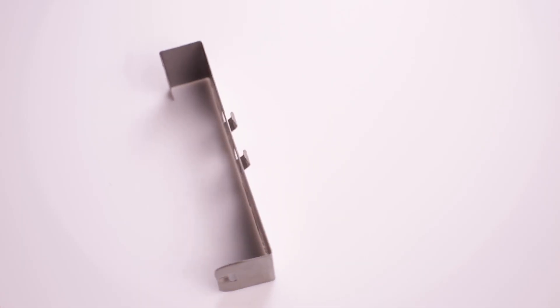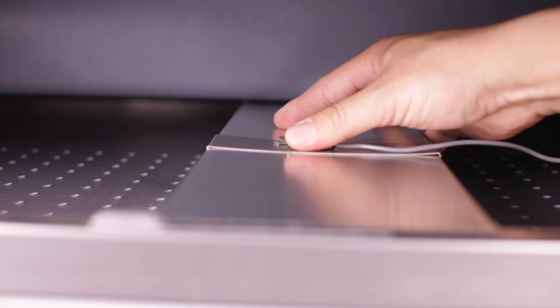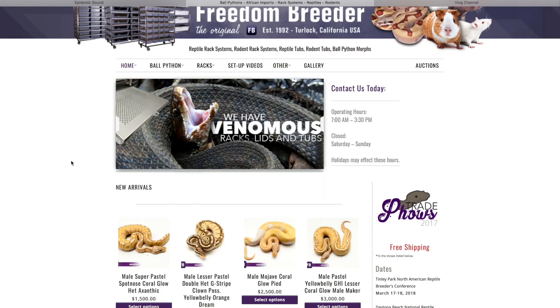The first and best option is to use a Freedom Breeder probe clip to secure the probe to one of the heat panels. These clips are available on our website.